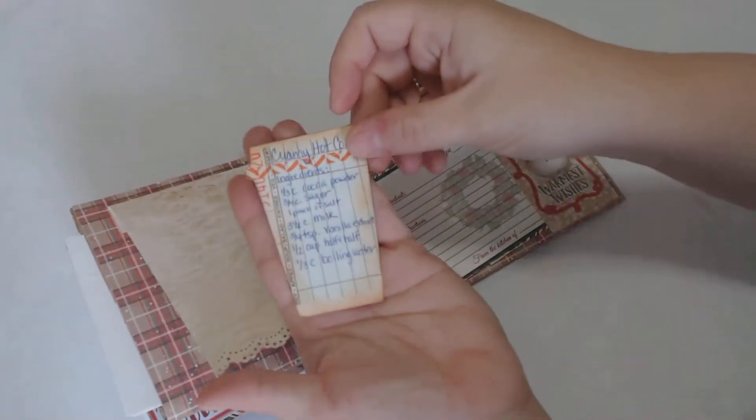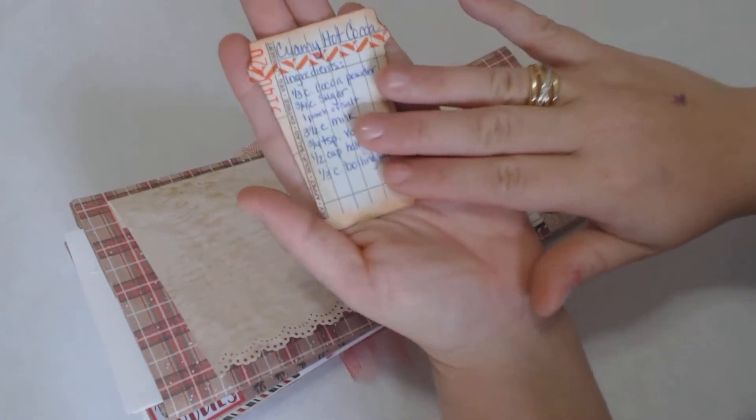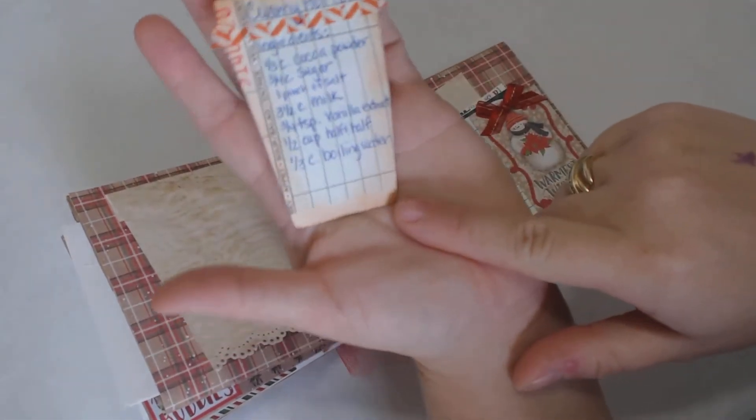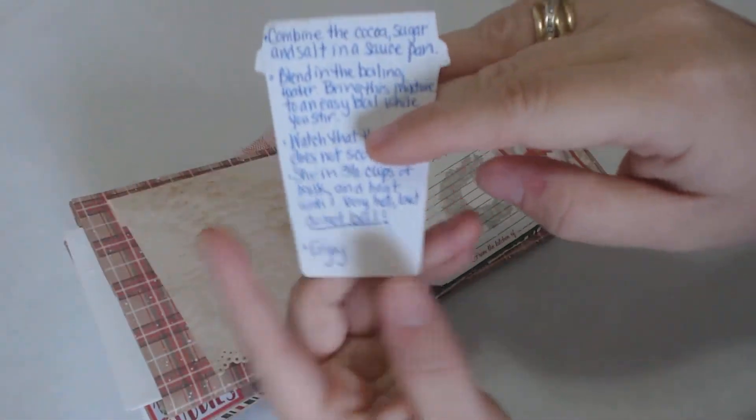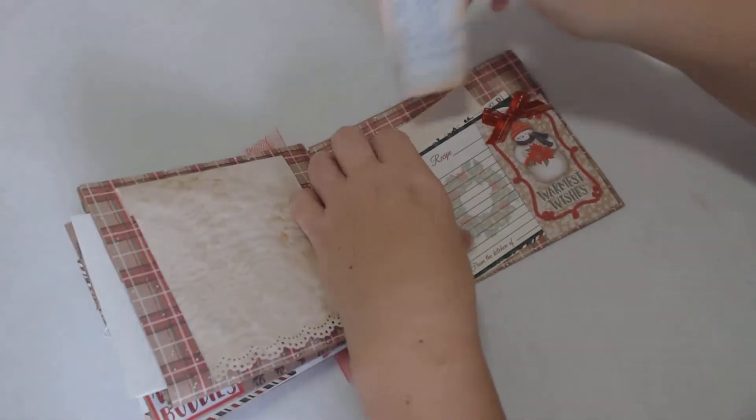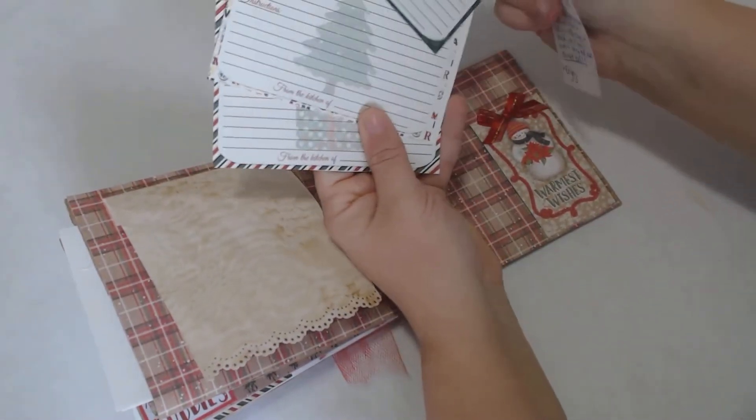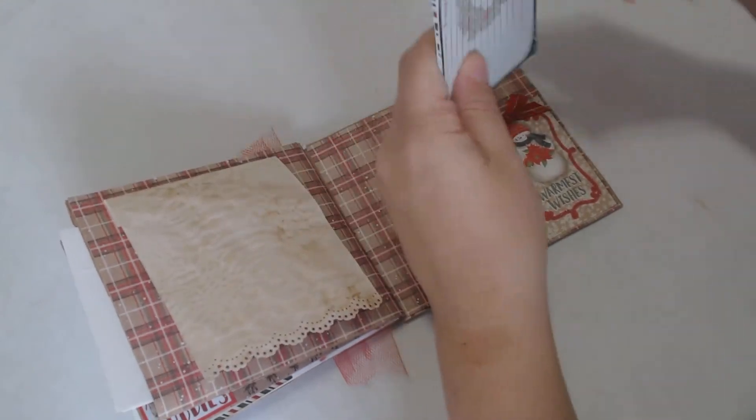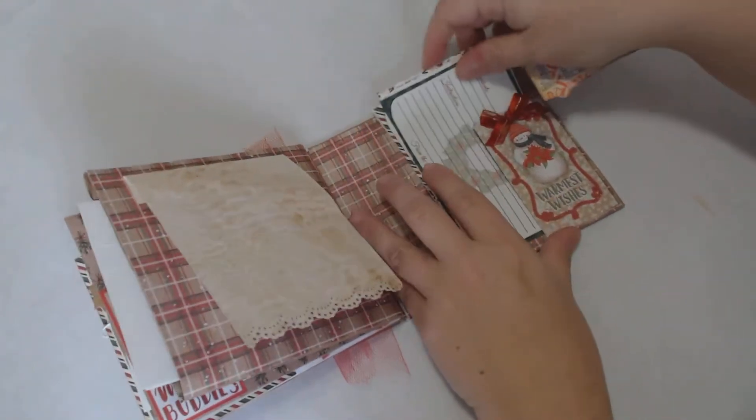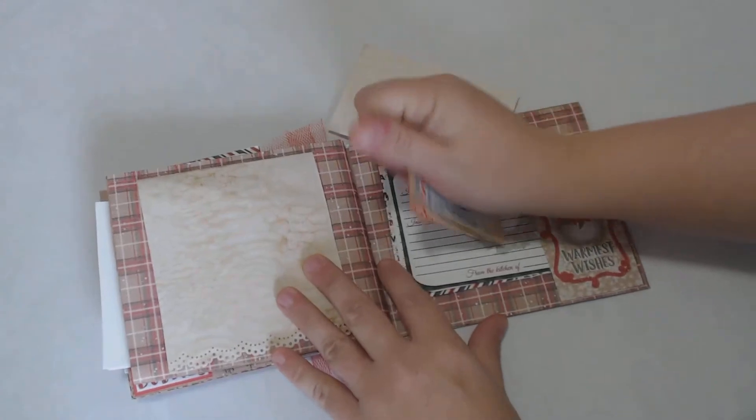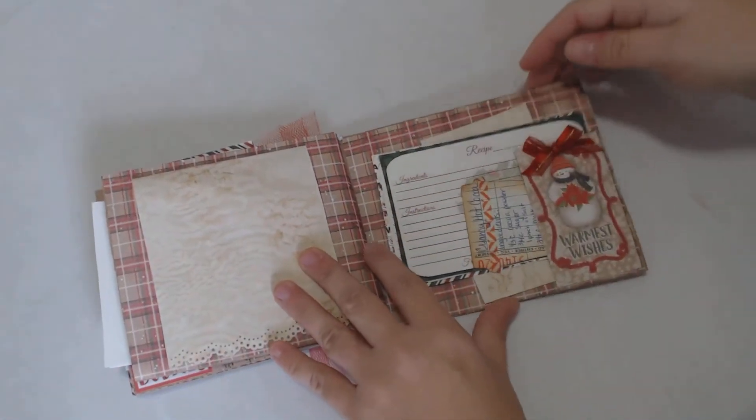Here's another one of those little cards that I made. I put creamy hot cocoa, homemade creamy hot cocoa recipe on it. Added a little bit of washi tape on here, and I thought that was a really cute recipe idea. Here's some more recipe cards and just some little scrap papers for them to make notes on and things like that. That is basically it for this.